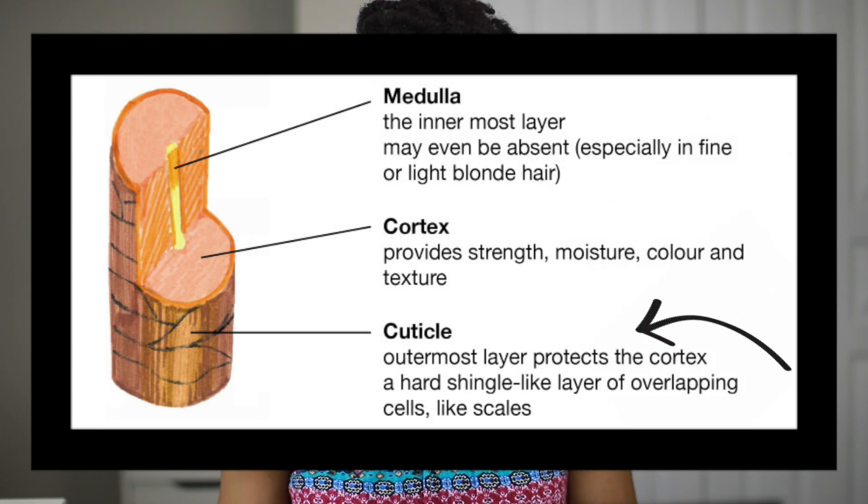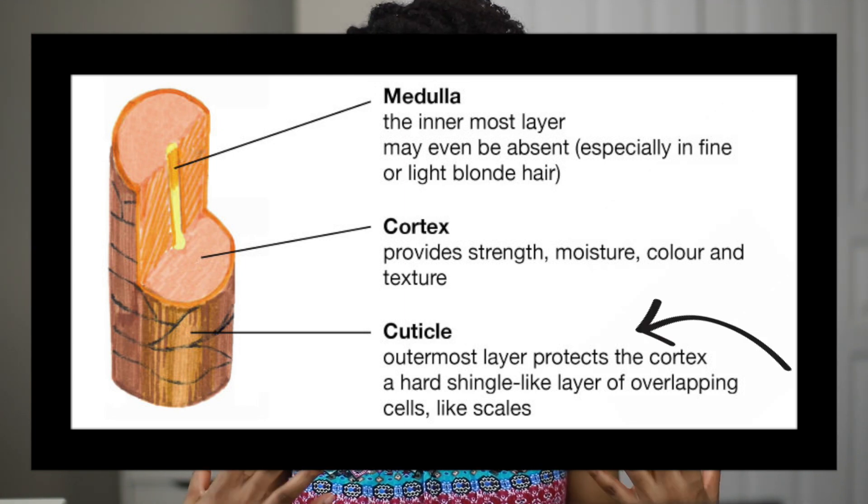The cuticle is the outermost layer and it protects the cortex. If you think of the roof of a house and the shingles laying on top that prevent moisture or water from going inside — that's basically what the cuticle is like. What I want you to understand is that your hair porosity level is directly related to the state of your cuticles: are they open, are they closed shut, or are they missing? All of that determines your porosity level.